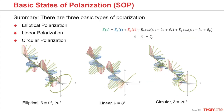There are three different basic types of polarization: the general elliptical, and the special linear at no phase difference, and the circular at 90 degree phase shift between X and Y electric field components.